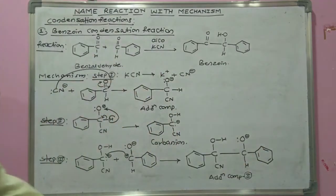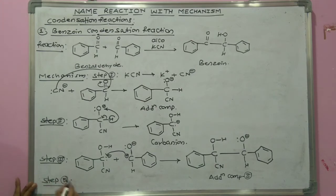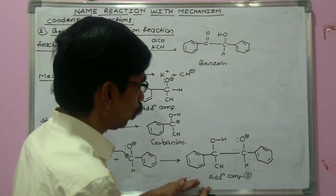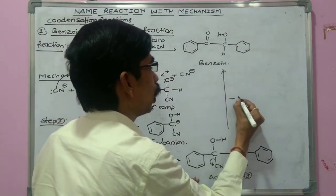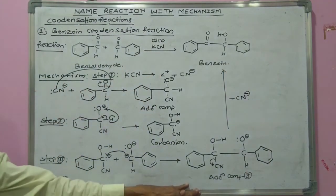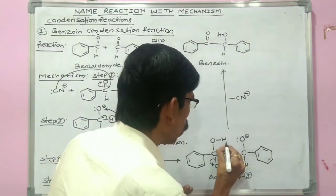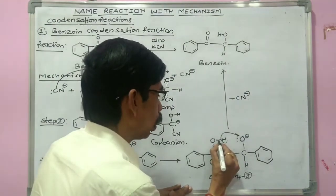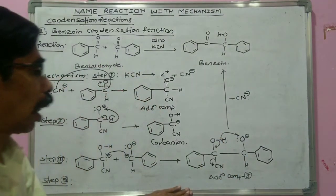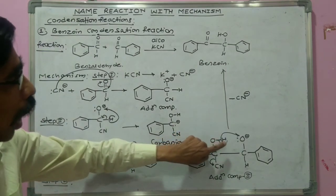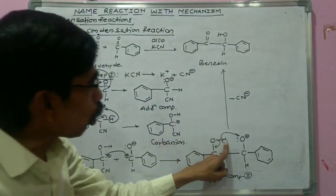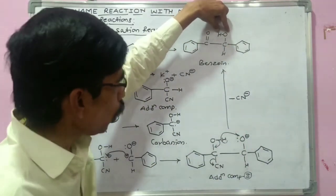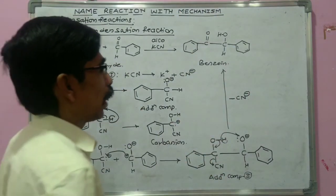Step four: in this addition compound, the CN⁻ ion is eliminated. When the CN⁻ ion is eliminated, the proton is transferred onto the negatively charged carbon atom and the bond between oxygen and hydrogen is transferred between the oxygen and carbon atom, forming a double bond between carbon and oxygen. When the proton is transferred onto the negatively charged oxygen atom, it becomes OH. The CN⁻ ion is eliminated to form benzoin as the final product.